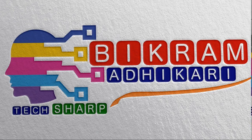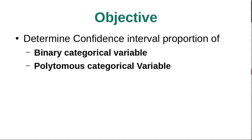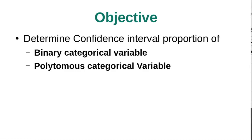Hello guys, this is Bikram Bhadikari. Welcome to my YouTube channel. In this video tutorial I'll show you how to determine the confidence interval for proportion in R. I will be determining the confidence interval of a binary categorical variable — that is, a categorical variable containing two categories — and for a polytomous categorical variable, that is, a categorical variable containing more than two categories.